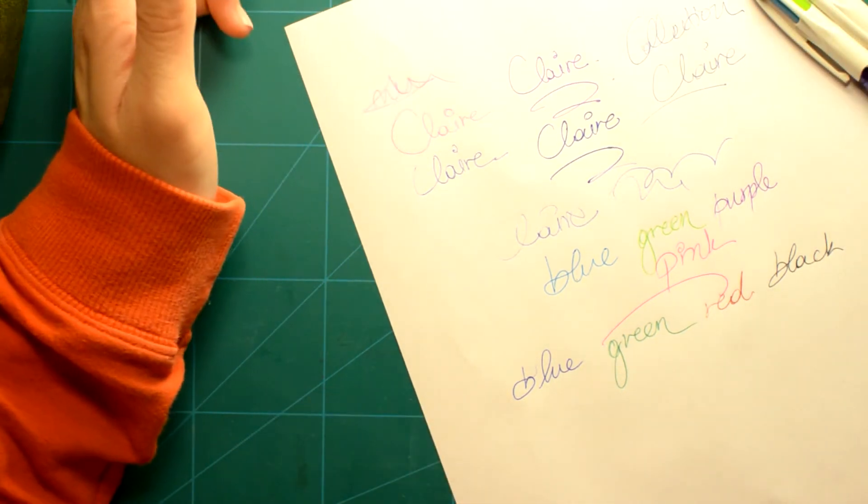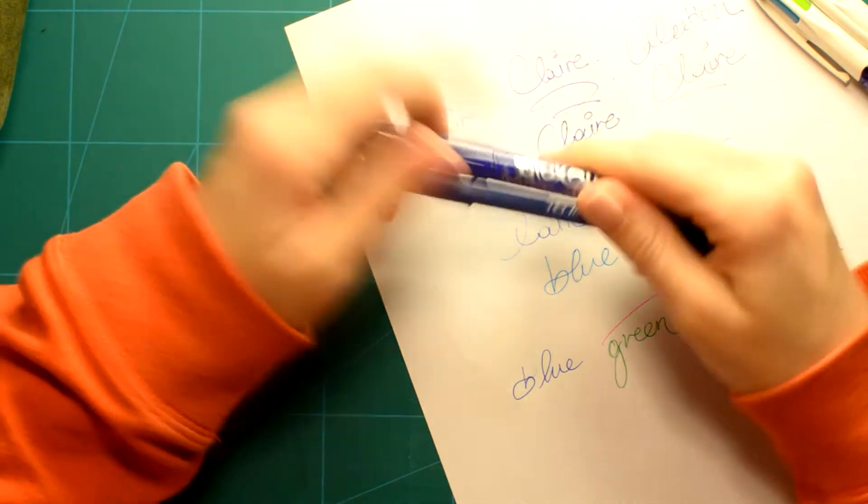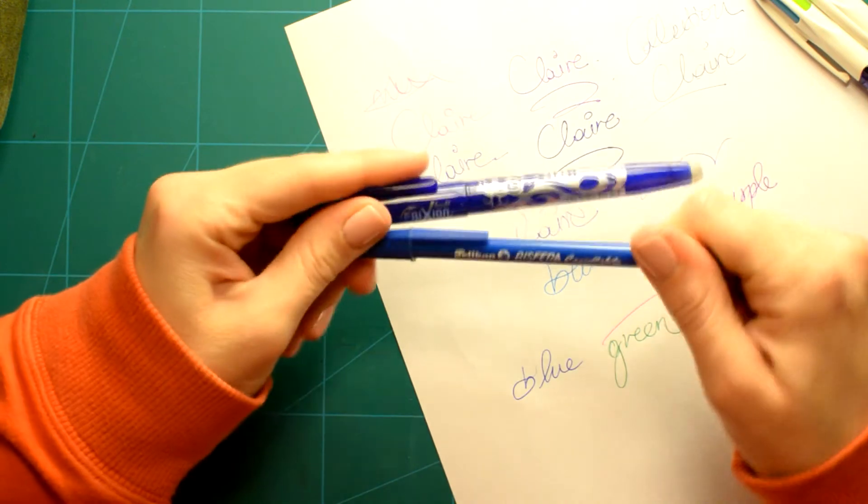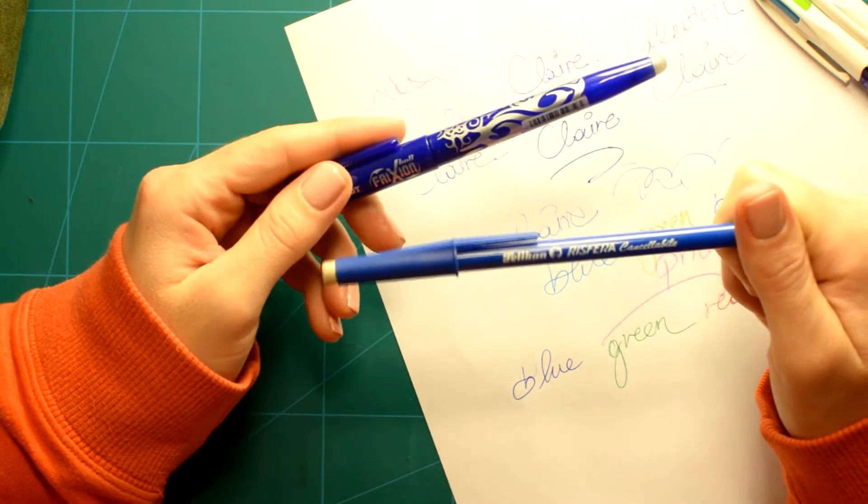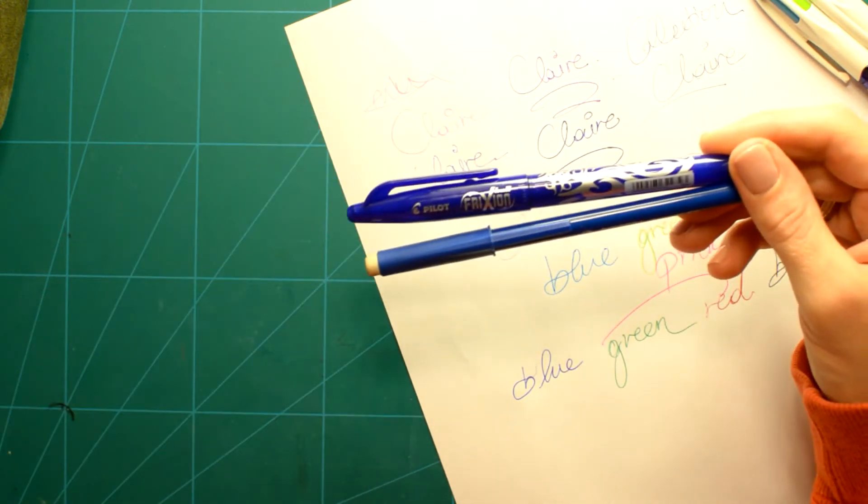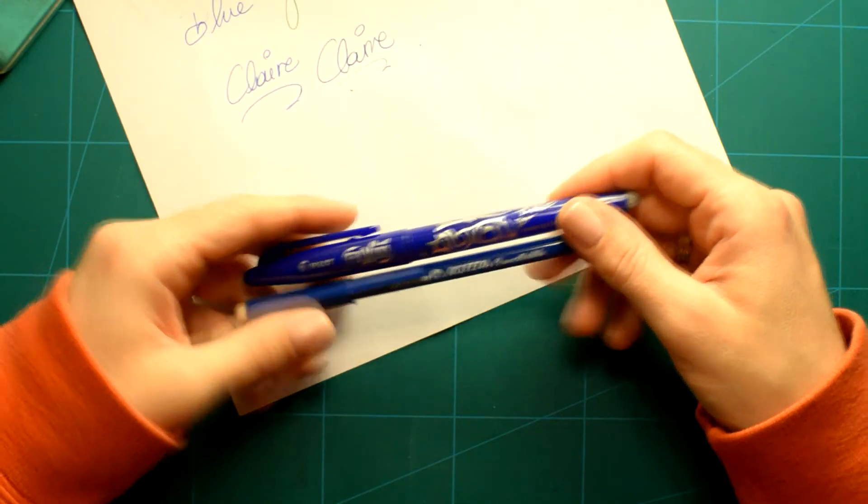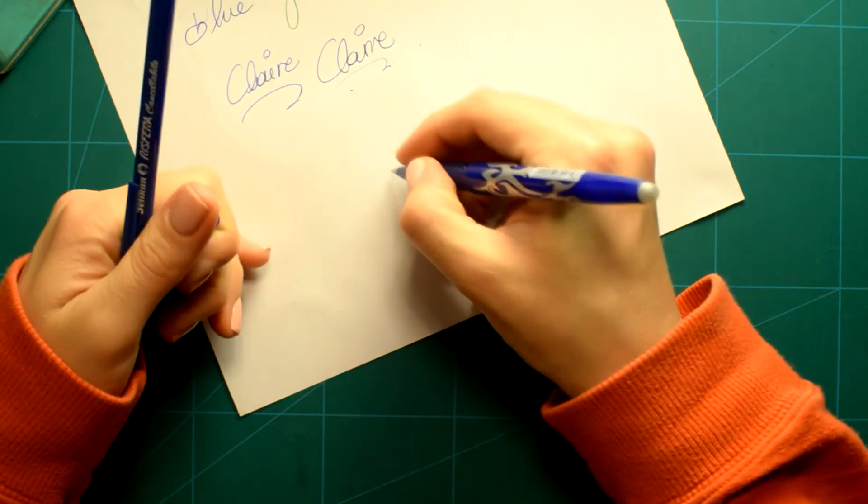And the last two pens I have on my desk are erasable ones. I have this one from Pelican and this one from Pilot. From these two erasable ones, I like the Frixion one more and I'll show you how they write.